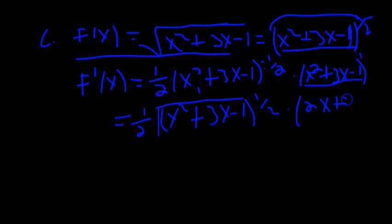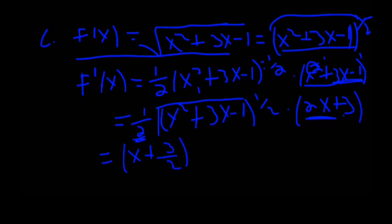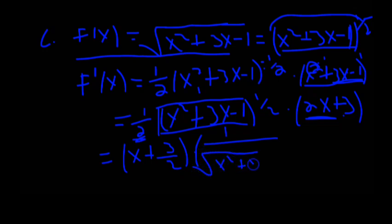Continuing the chain rule: times the derivative of (x squared plus 3x minus 1), which is 2x plus 3. So the final answer is 1 over 2 times (2x plus 3) over the radical of x squared plus 3x minus 1.